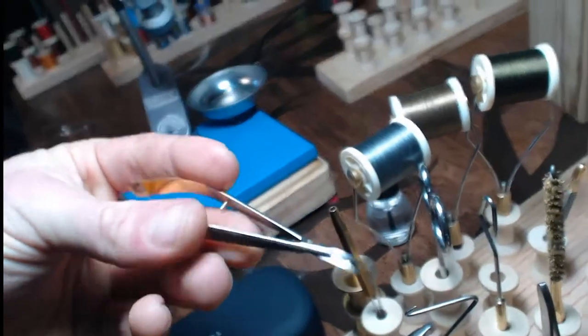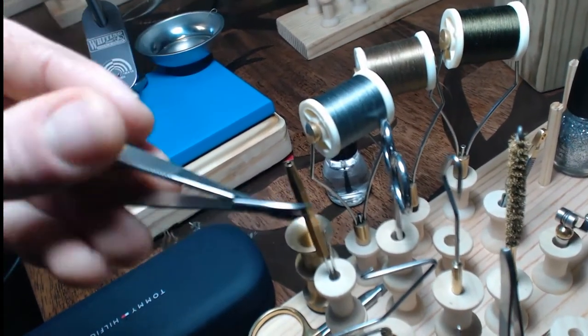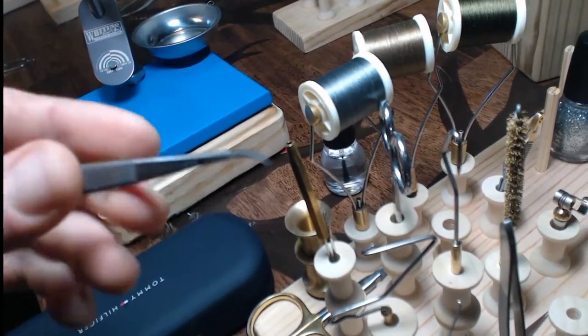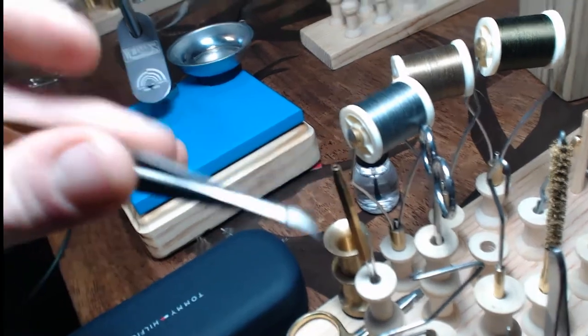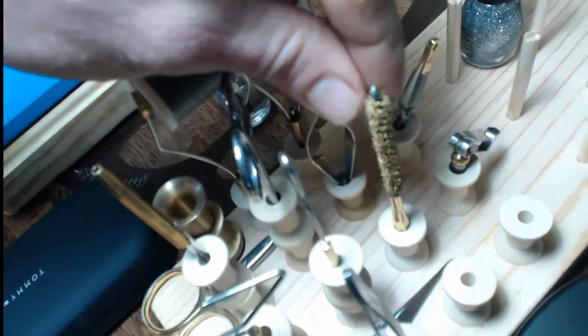I got some spring scissors that are curved and that helps with the deer hair once it's tied on the fly. You can come in and shape the body really quick because these scissors open up and you just sit there and trim them out. I had to drill some of these holes a little bit bigger than the other ones to get them to fit inside.